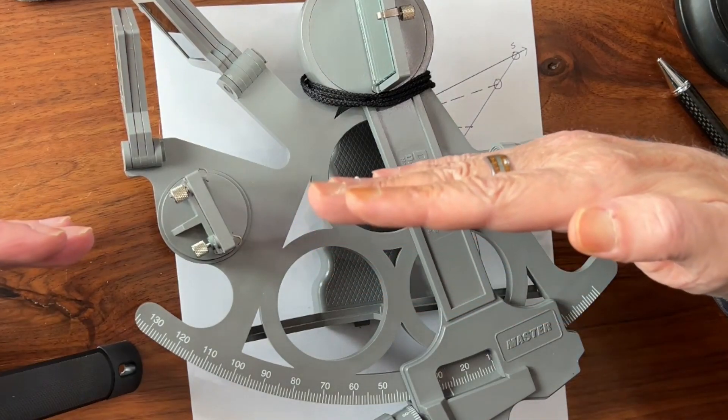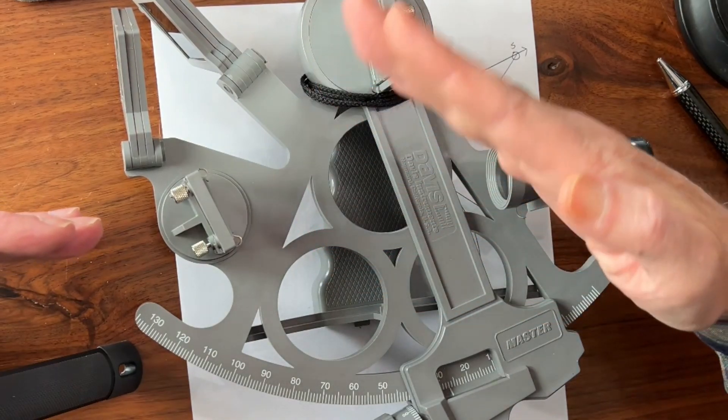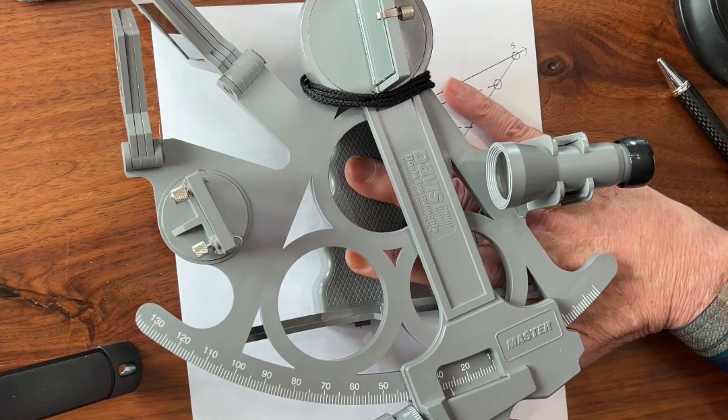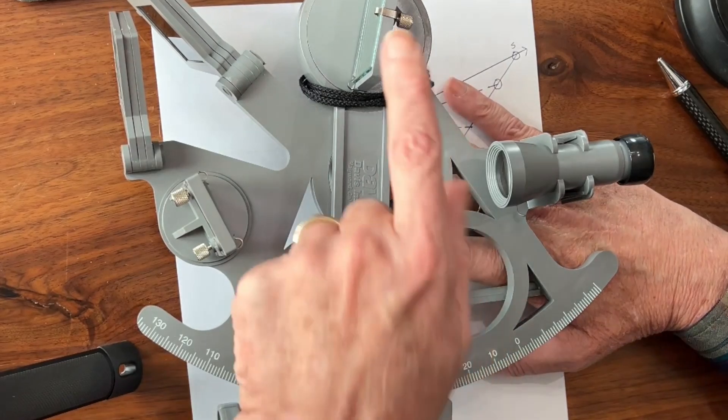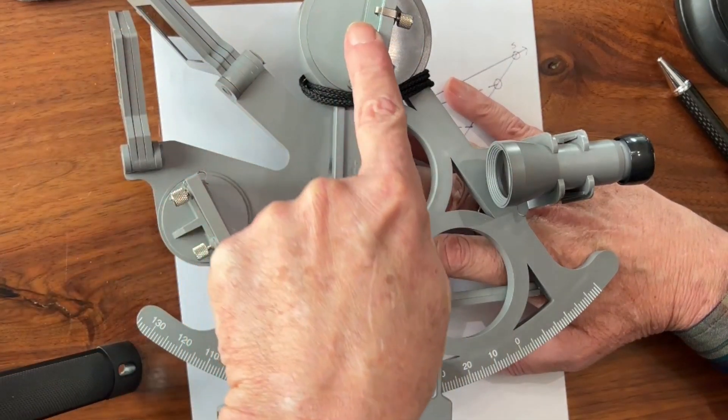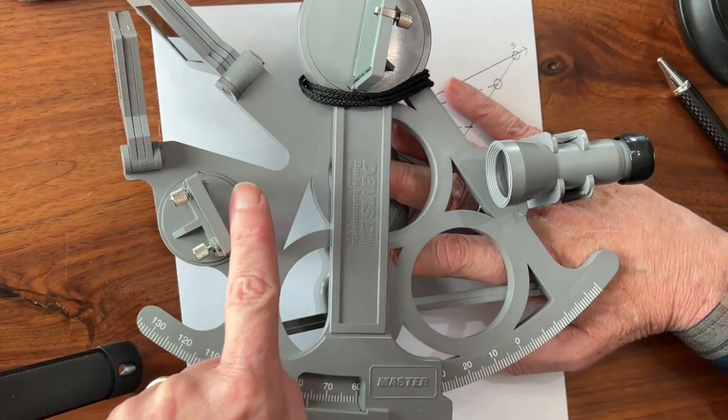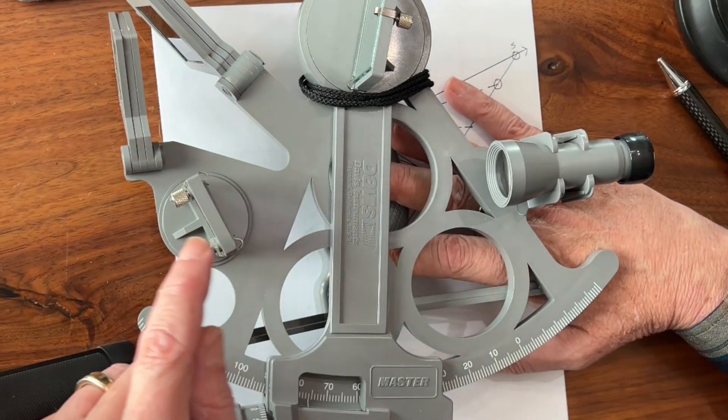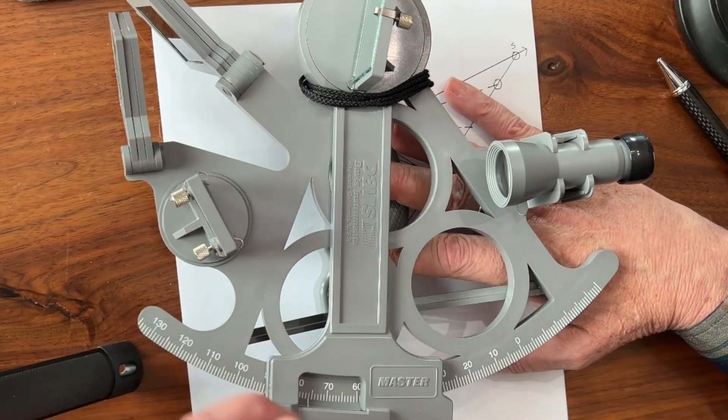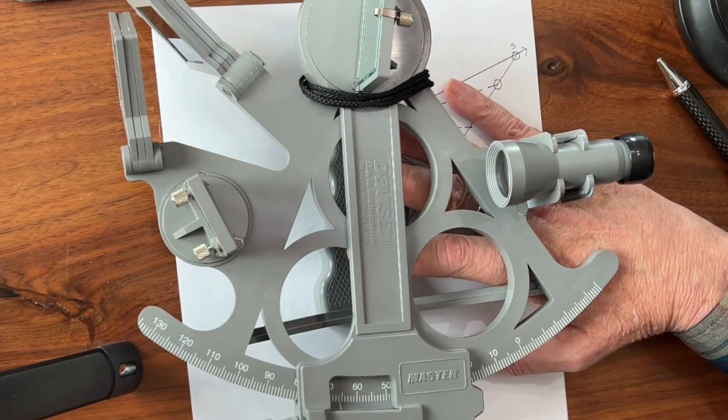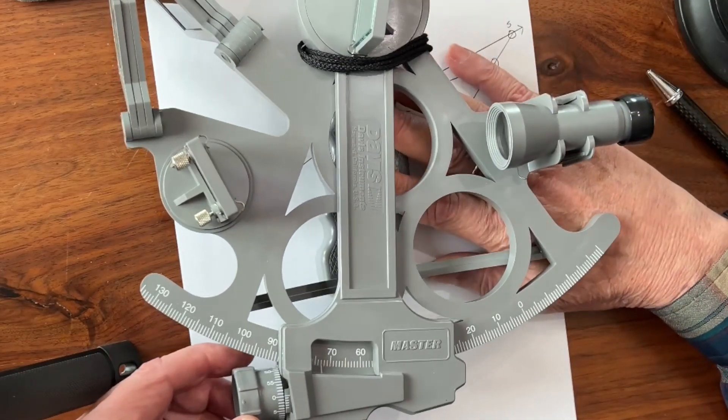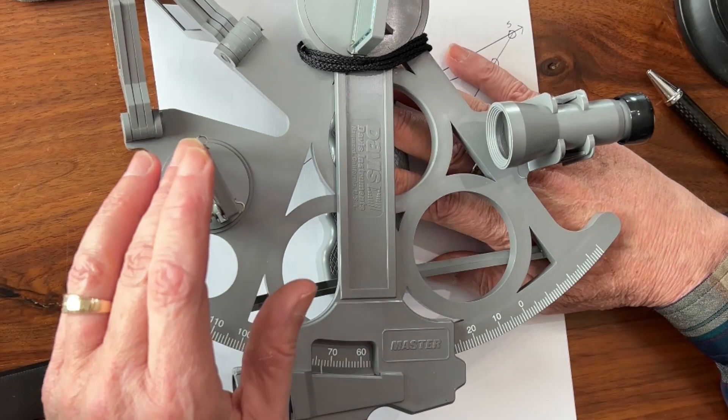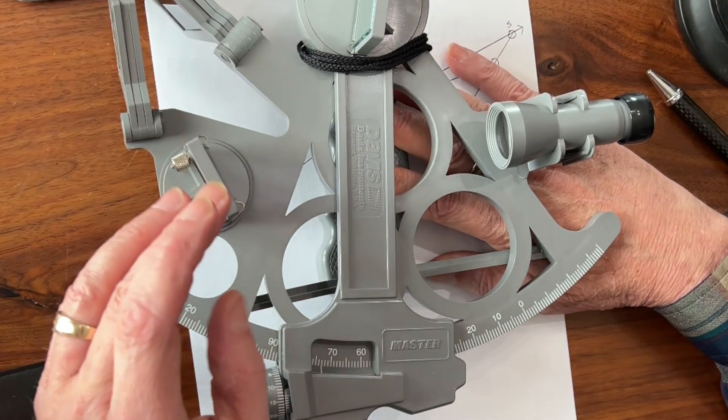However, you want to measure the angle between that line and a star that's up above the horizon. So what you do is you take your index arm and your index mirror, and you cause the light that comes down from that star to bounce off of this mirror and into your eyepiece. And what you will see is you will see the horizon, and you'll see a star just above it. Then what you do is make some fine measurements right here, including using this little vernier scale to make very slight movements, and you want to bring that star so that it lines up right on the horizon.